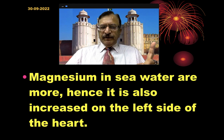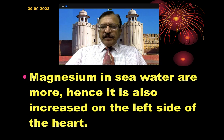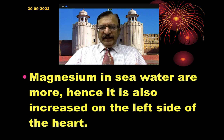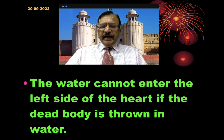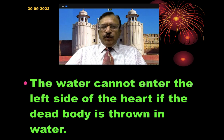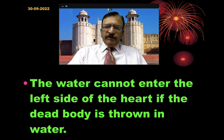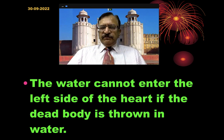Magnesium in seawater is very specific — magnesium is more abundant in seawater, and hence it is also increased in the left side of the heart. So in salt water drowning, magnesium will be detected in abundance in the left side of the heart. Importantly, water cannot enter from the left side of the heart if the dead body is thrown in water after death. If the person was already dead and thrown in water, these changes observed in the left side of the heart will not be observed.